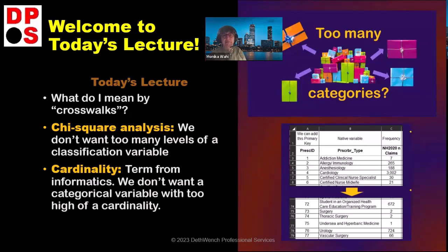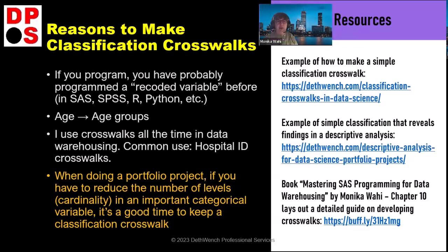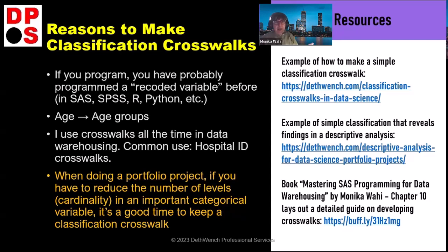When you have too many categories, you can't really do a lot with your data. That's what crosswalks are about. The reason you make classification crosswalks is similar to recoding a variable — think of age groups. I use crosswalks all the time in data warehousing. Like, there are only so many hospitals in a region; they have different names over time but they're the same physical building, and Medicare might have a different identifier than a local state identifier. That's where I really use crosswalks.